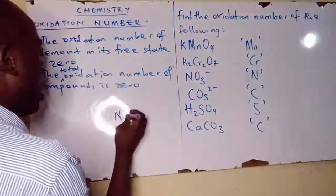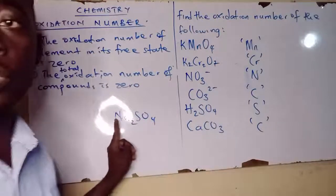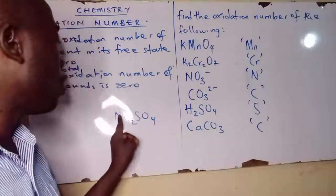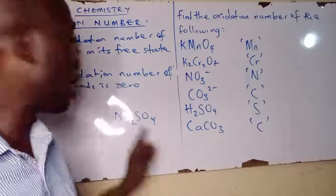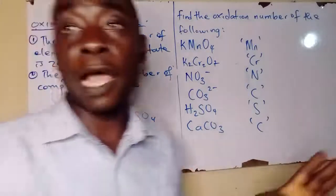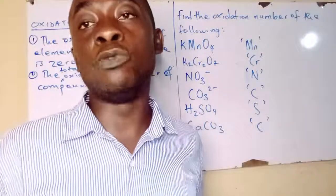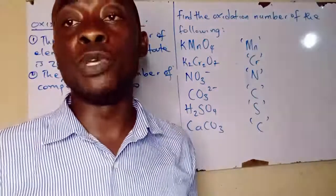For example now, Na2SO4. The total oxidation number is the sodium, the sulfur, and the oxygen. The total oxidation always amounts to equal to zero.